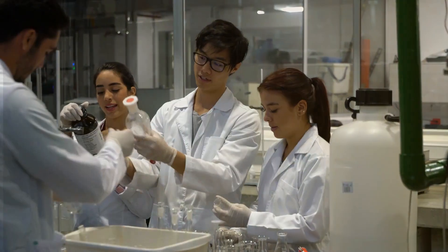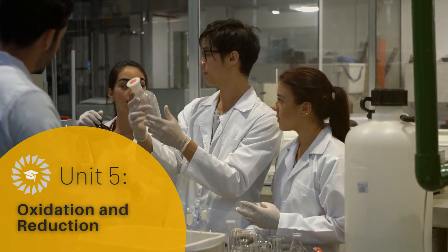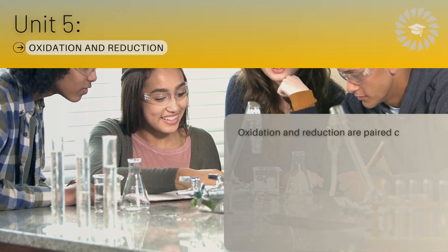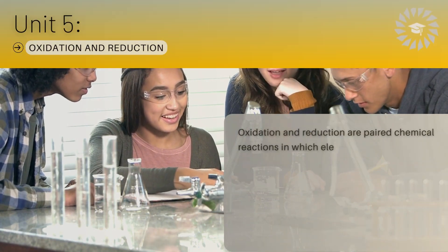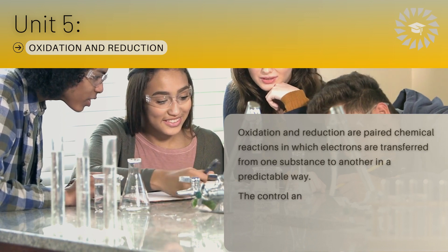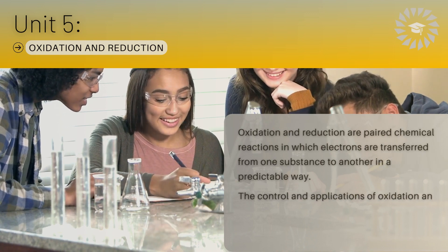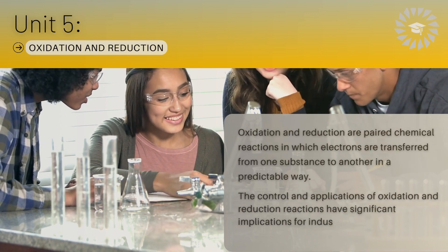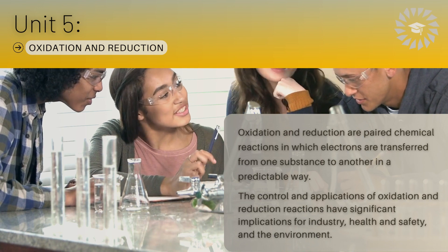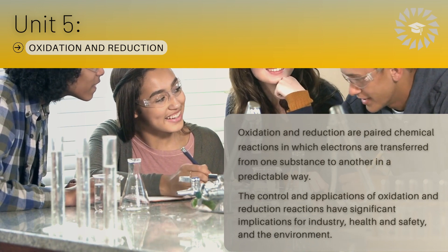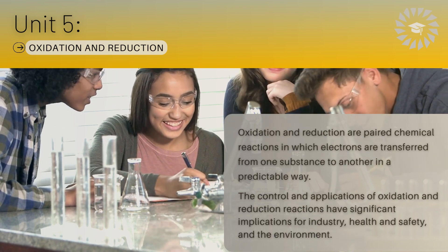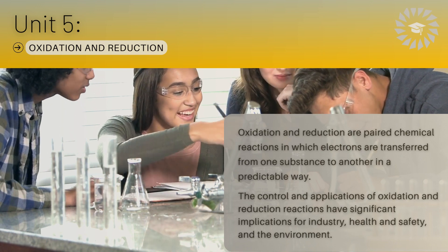Unit 5: Oxidation and Reduction. Oxidation and reduction are paired chemical reactions in which electrons are transferred from one substance to another in a predictable way. The control and applications of oxidation and reduction reactions have significant implications for industry, health and safety, and the environment.